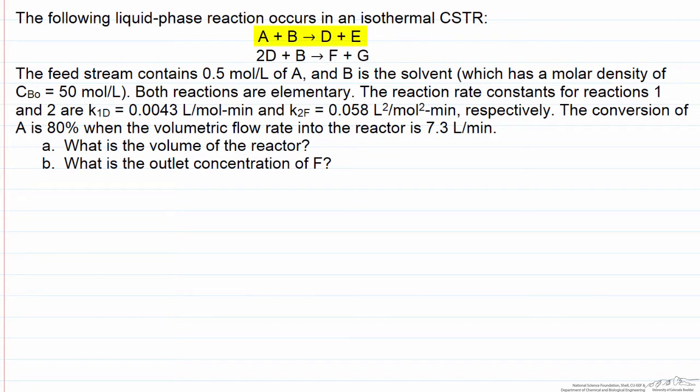We have a reaction of component A with B to produce two compounds, D and E. B is actually the solvent, and so it's present at much higher concentration than A, which we'll be able to use to simplify the problem. In Part A, we're asked to determine the volume of the reactor.